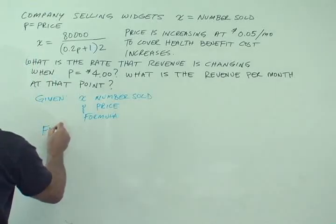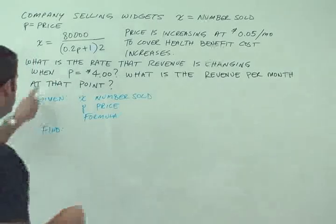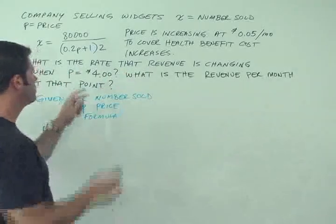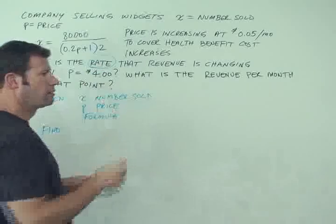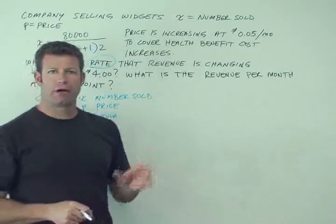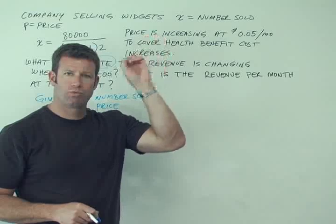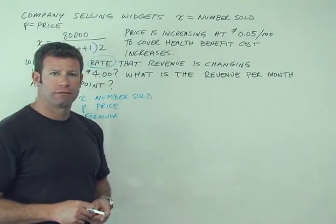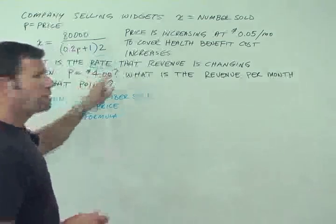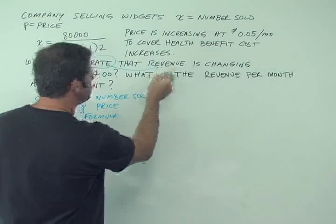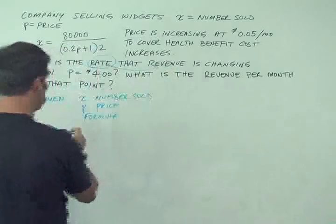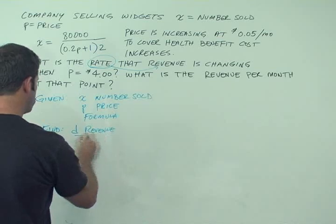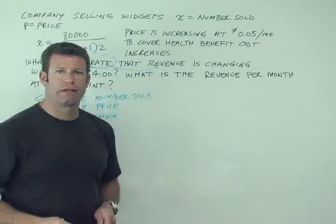First of all, rate revenue is changing. Now as soon as I see the word rate, immediately another beacon should be going off in your head, because rate means that we have something with respect to time. So in this case, what is that thing we have with respect to time? Rate that revenue is changing, so we have revenue per time. So find d revenue dt, right? That's what we're asked to find there.